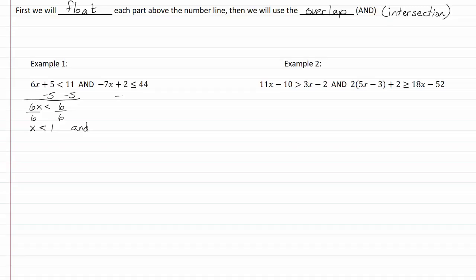Solving the other equation, we're going to subtract by 2. We get -7x is less than or equal to 22. Whoops, how about let's make that 42, and divide by -7. So we're going to get x is greater than or equal to -6.